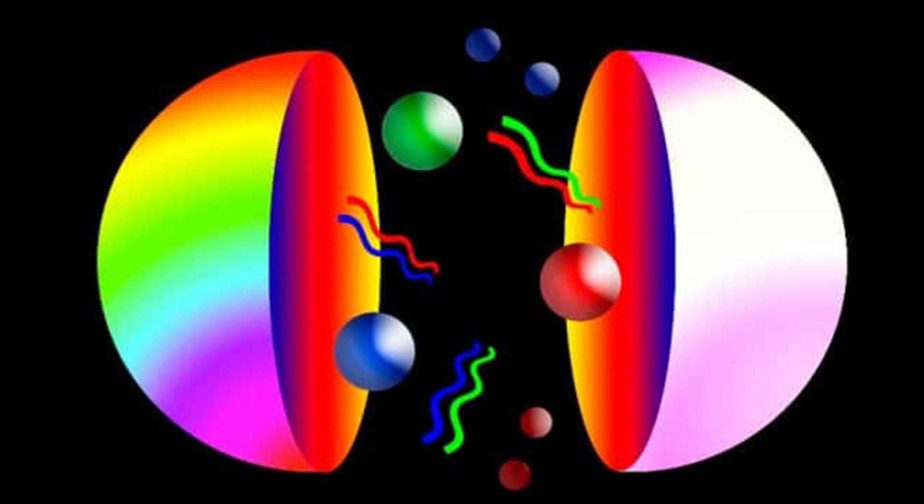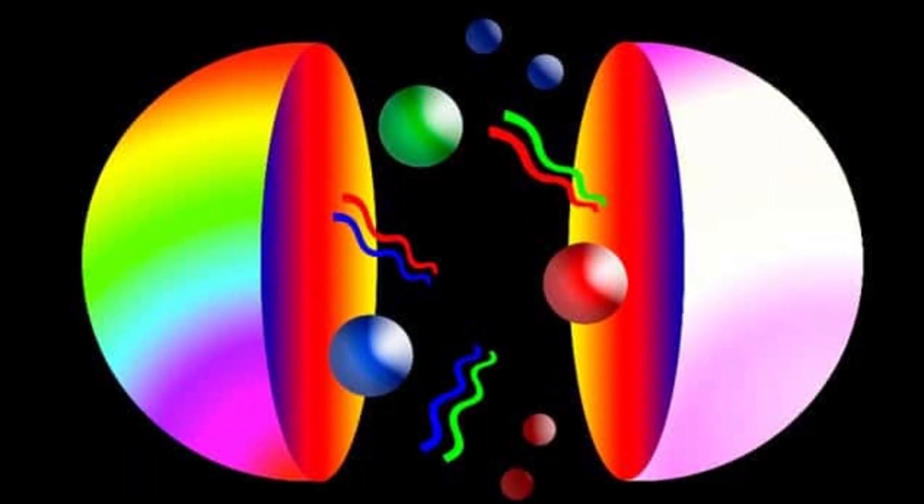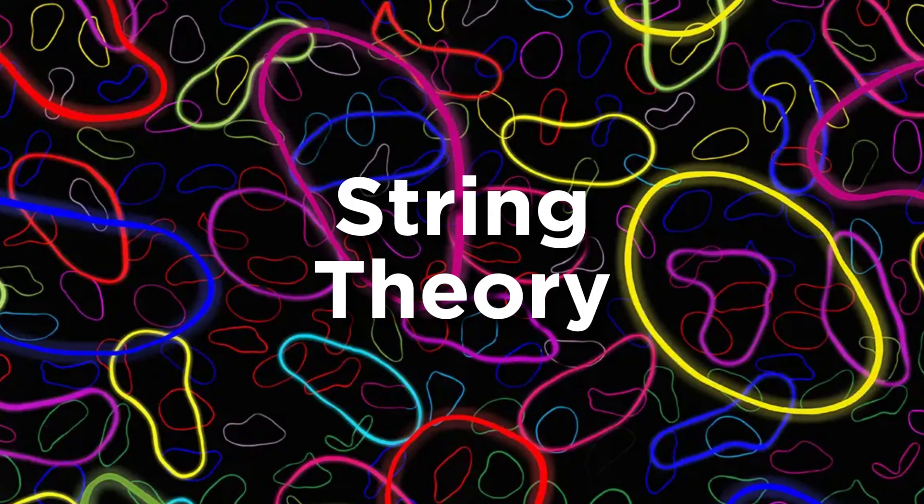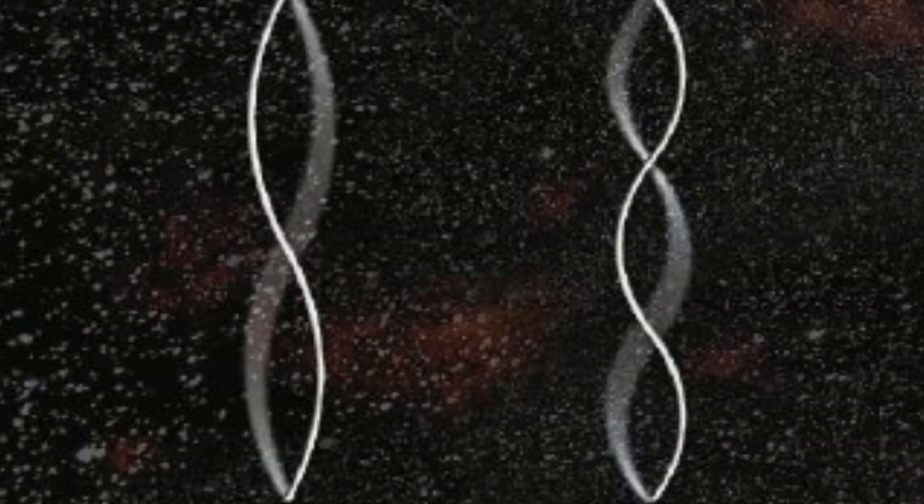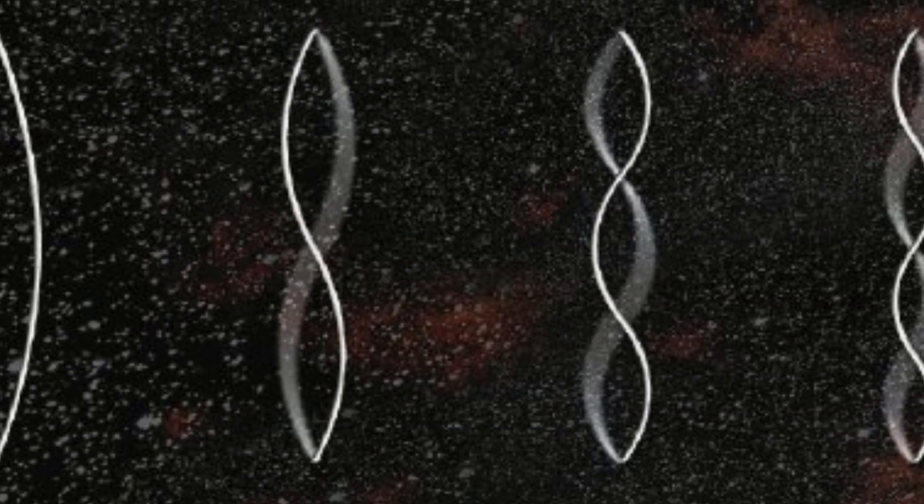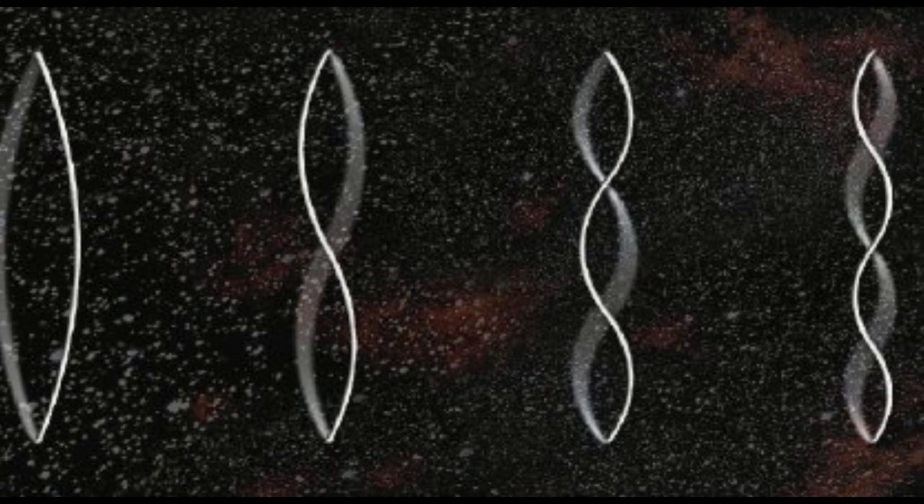What if the quarks that we mentioned before could be broken down even further? Well, string theory states that they can. And that once broken down to the final state, you get a one-dimensional string as opposed to a single point. And this string has a specific vibration. This vibration determines which particle will be created.